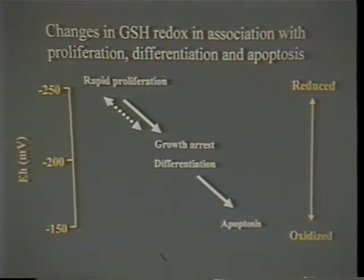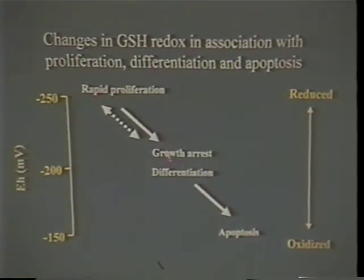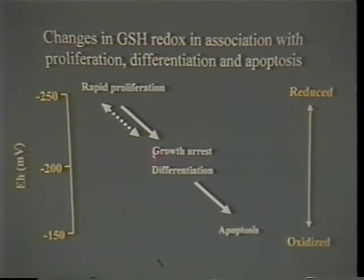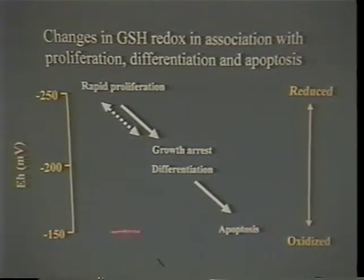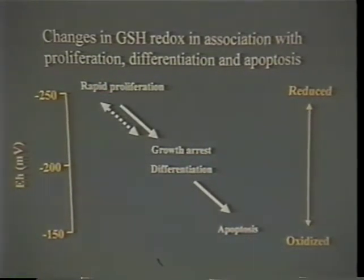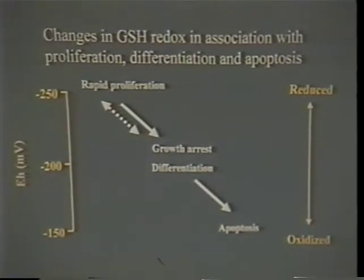Summary: We do have good data that this is a reversible process with regard to proliferation and growth arrest. With apoptosis, this is a downstream event - when you get to that level of oxidation, it's a no-recovery situation where cells are committed to death.